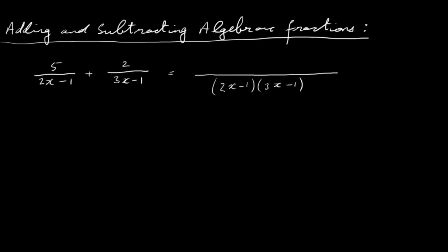So we have 2x minus 1 in the original denominator, and we've turned it into 2x minus 1 times 3x minus 1. What we've done to this 2x minus 1 is multiply it by 3x minus 1. So in order to maintain this fraction — to keep it equal — we must multiply the numerator by 3x minus 1 as well.